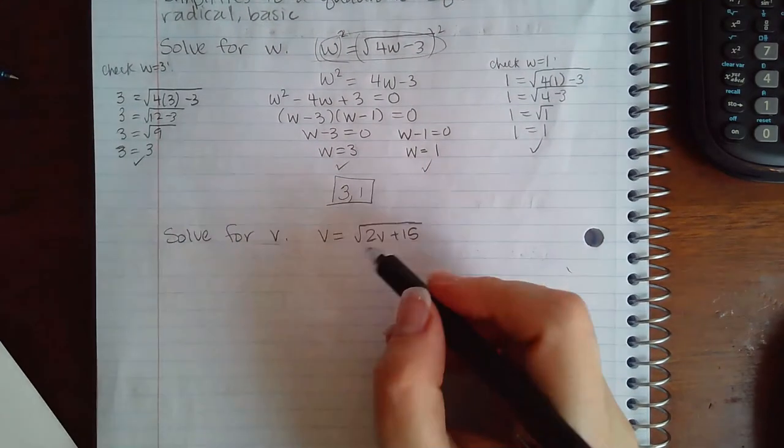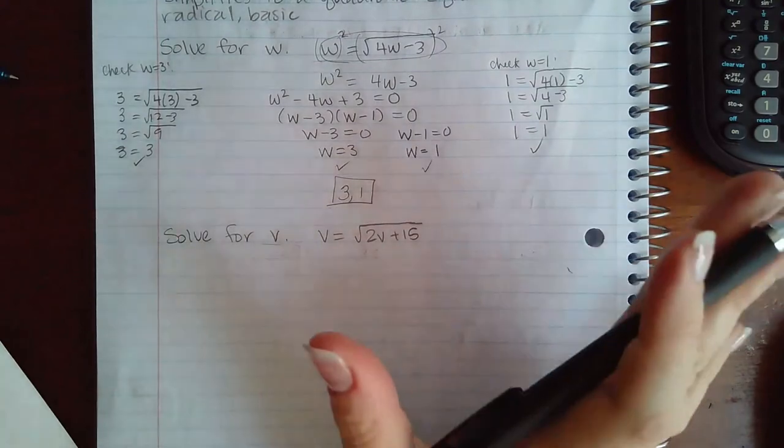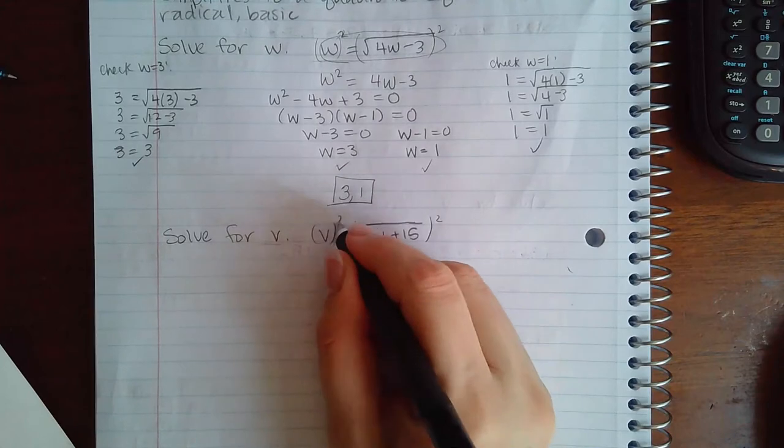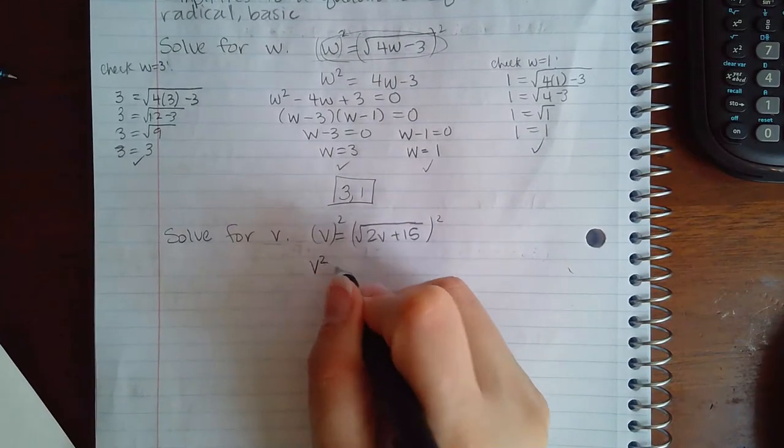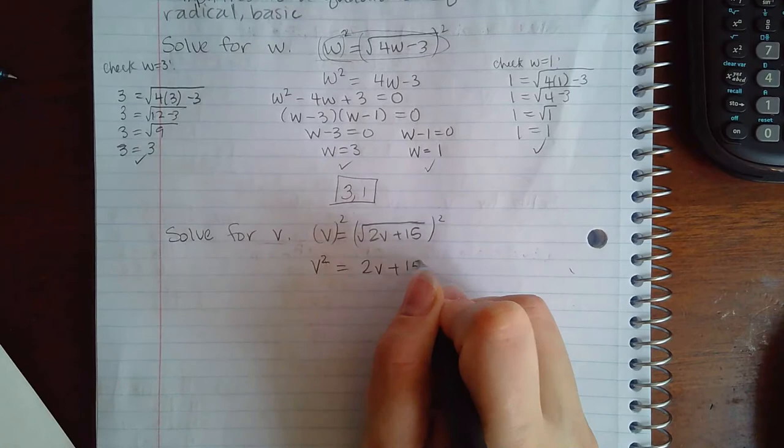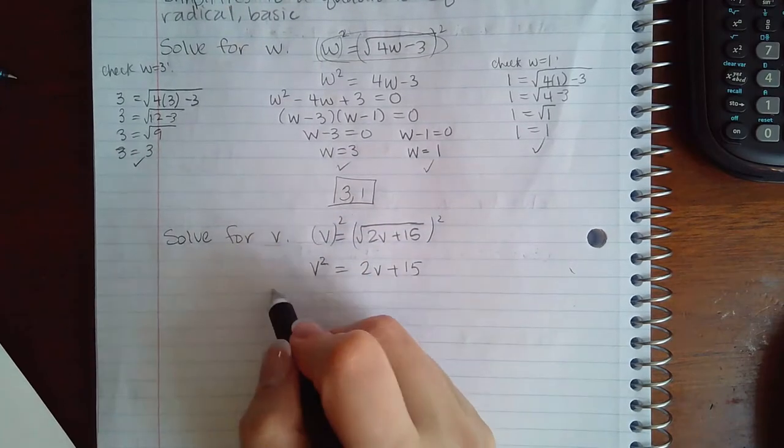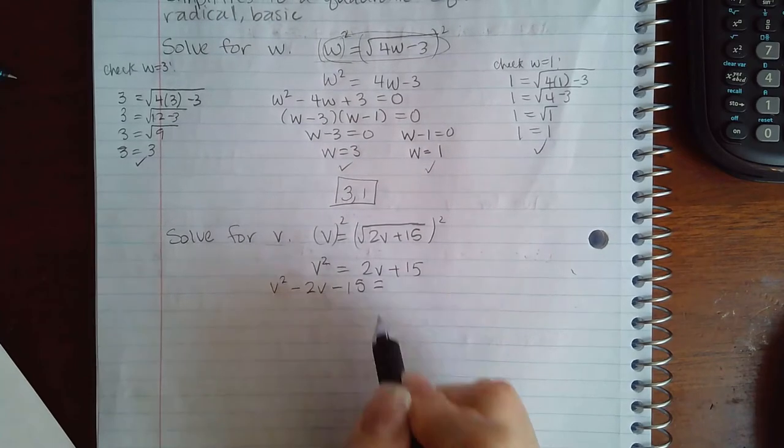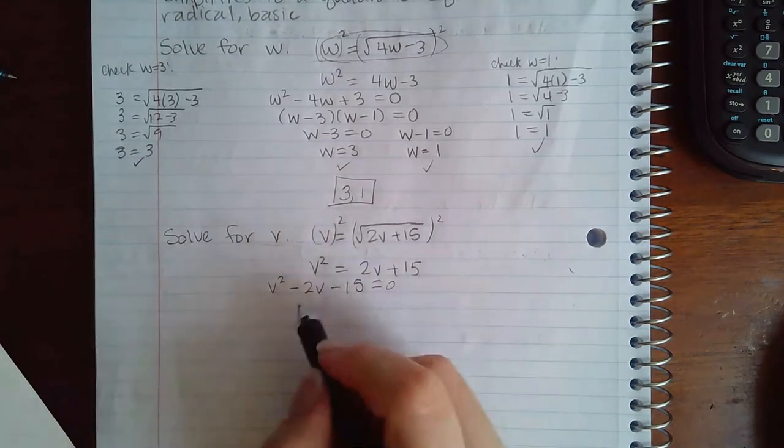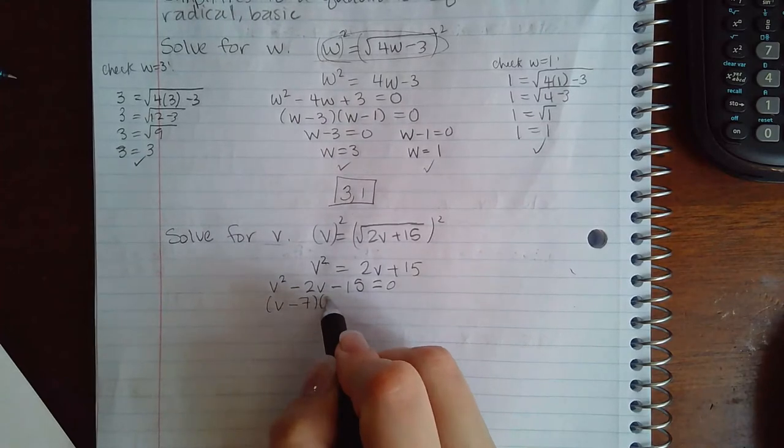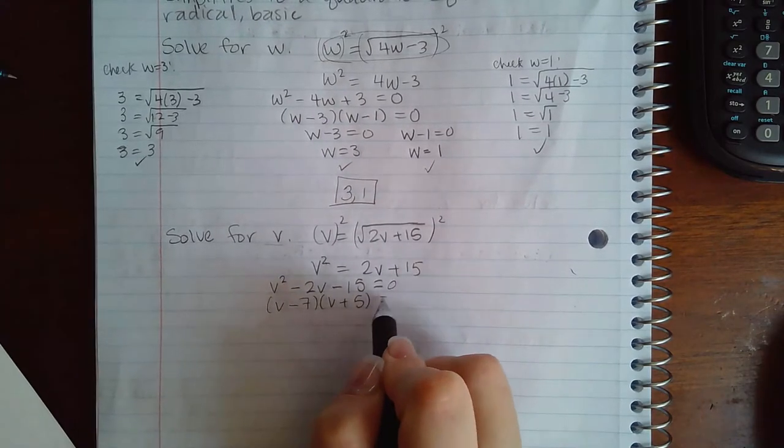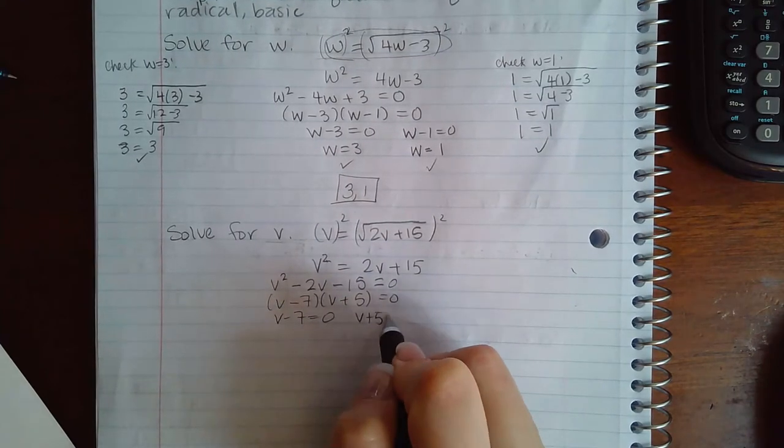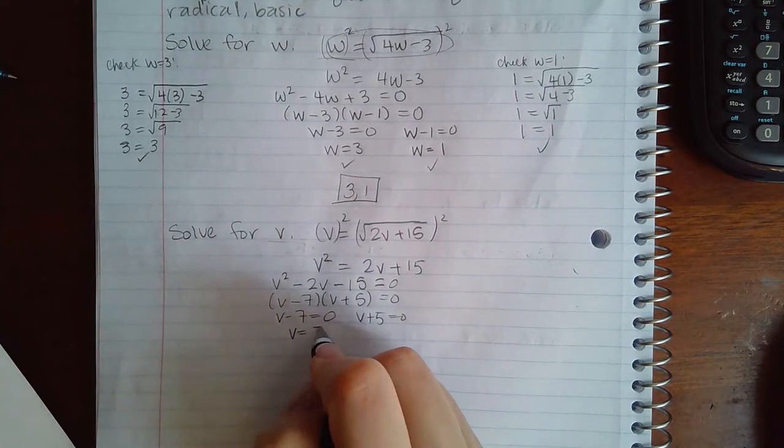Now let's look at this next example. The radical piece is already by itself so I can go ahead and square both sides. I get v² equals 2v plus 15. I can move these terms over to the left hand side because it is a quadratic now because of the v squared. And I can factor this into v minus 7 and v plus 5. So if I set each factor equal to 0, I get v equal to 7 and v equal to negative 5.